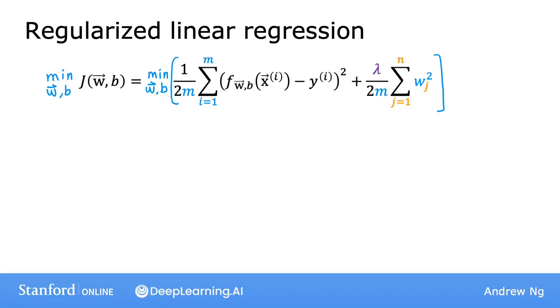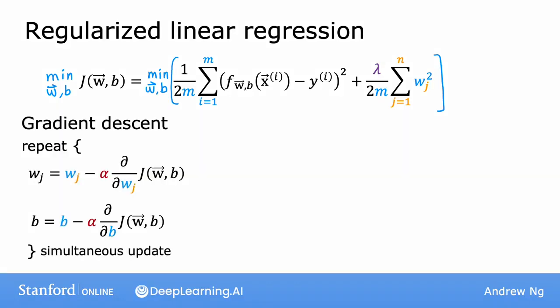Previously, we were using gradient descent for the original cost function, just the first term, before we added that second regularization term. And previously, we had the following gradient descent algorithm, which is that we repeatedly update the parameters w_j and b for j equals 1 through n according to this formula. And b is also updated similarly.